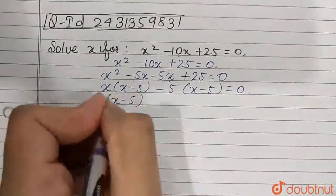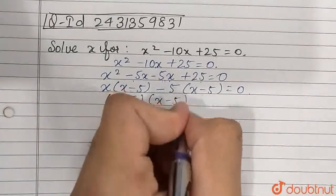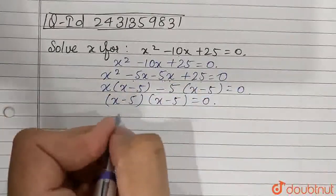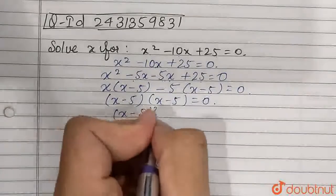Now we take (x - 5) common. We get (x - 5)(x - 5) = 0, or (x - 5)² = 0.